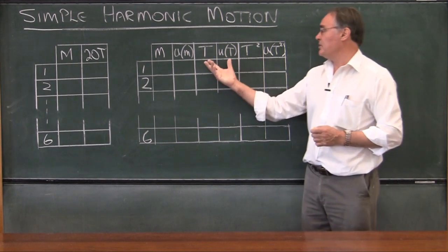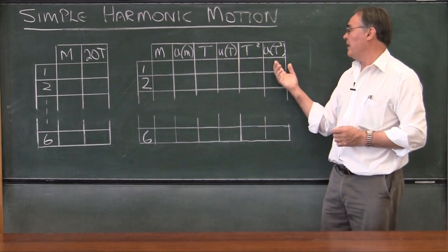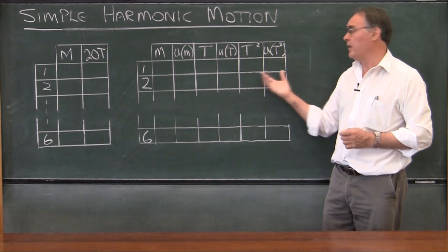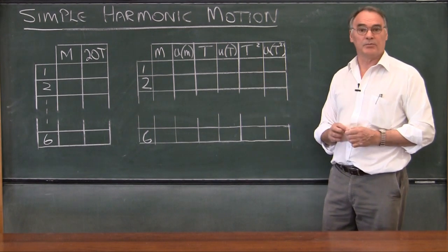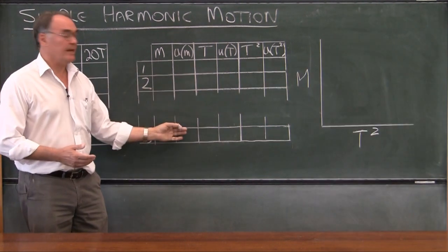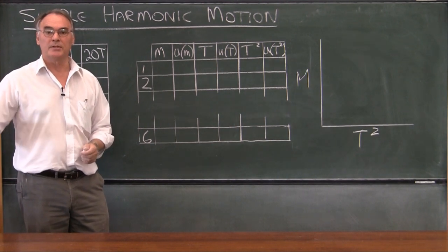Once again, once you have this, you're going to calculate period squared and the uncertainty in the period squared. This is for the linearization process. Once you've completed this tabulation, you're ready to go to the computers.